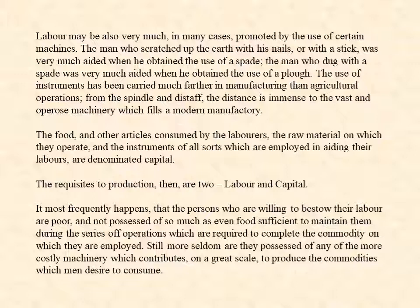The food and other articles consumed by the laborers, the raw material on which they operate, and the instruments of all sorts which are employed in aiding their labors are denominated capital. The requisites to production then are two: labor and capital. It most frequently happens that the persons who are willing to bestow their labor are poor and not possessed of so much as even food sufficient to maintain them during the series of operations which are required to complete the commodity on which they are employed.